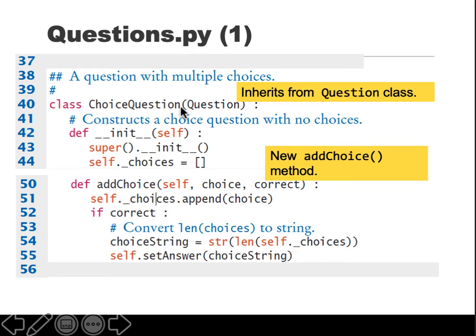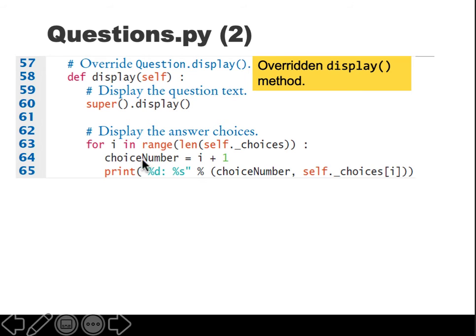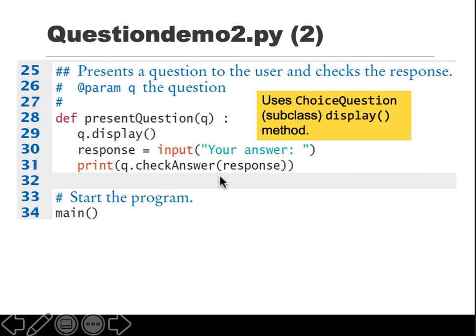What's happening in the ChoiceQuestion class? You're inheriting from Question. The constructor first calls the constructor of the parent class, defining a new variable called choices to be an empty list. We've already seen the addChoice method. If the correct choice was passed, do this. We've seen these functions. The display calls the display of the parent, then in a loop displays the choices: A, B, C, D, or 1, 2, 3, 4 in this case.